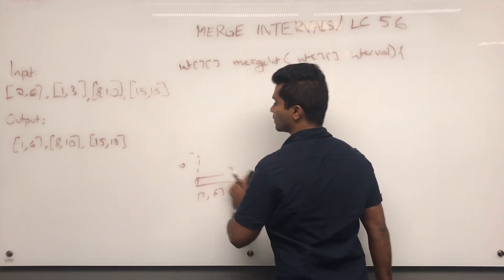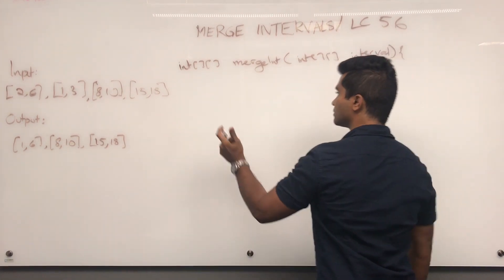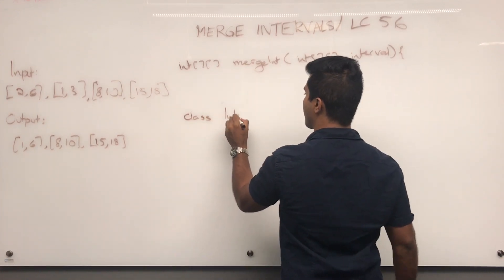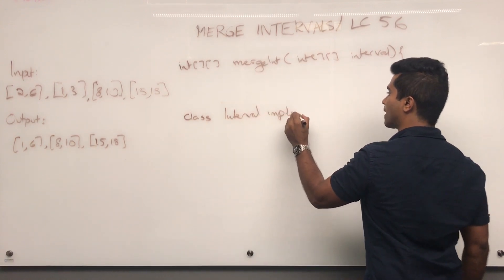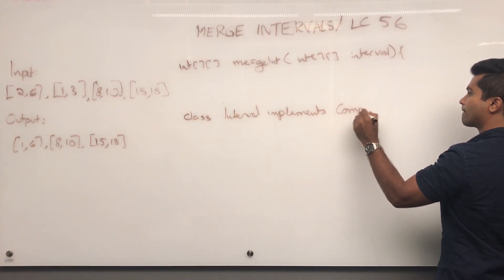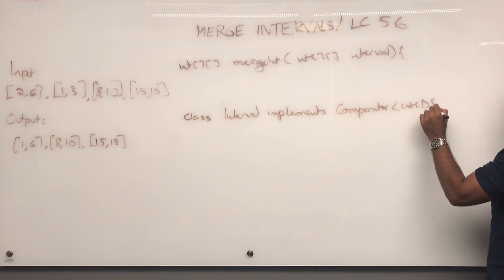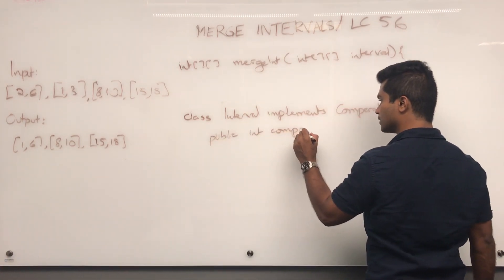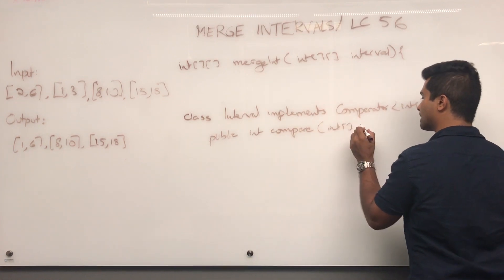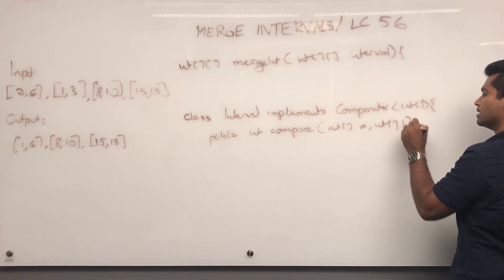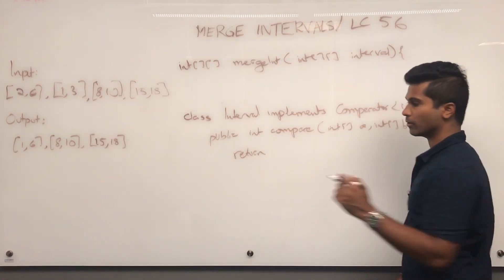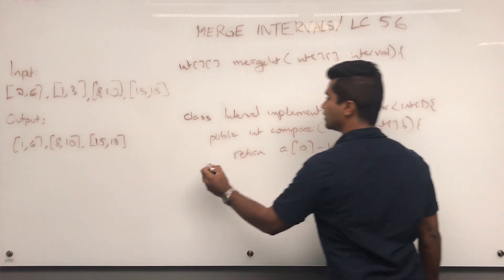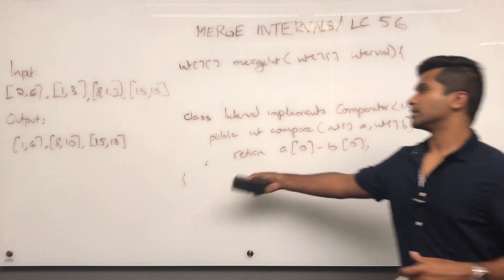Let me write the comparator class for that. So let's say class interval implements comparator, and just override the compare method. Public int compare a int b. And then we return, since we want ascending order, a of 0 minus b of 0. This is what we're going to pass in to sort the input array.